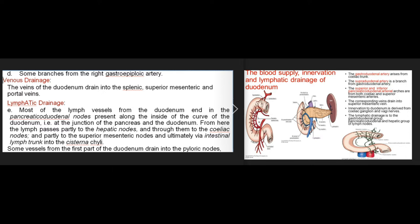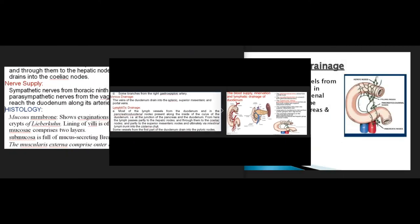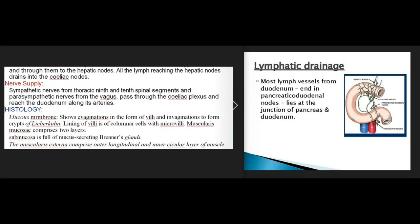Some vessels from the first part of the duodenum drain into the pyloric nodes and through them to the hepatic nodes. All lymph reaching the hepatic nodes drains into the coeliac nodes. The nerve supply is sympathetic from the thoracic ninth and tenth spinal segments, and parasympathetic from the vagus, passing through the coeliac plexus along its arteries. Histologically, the mucous membrane shows evaginations forming villi and invaginations forming crypts of Lieberkühn.